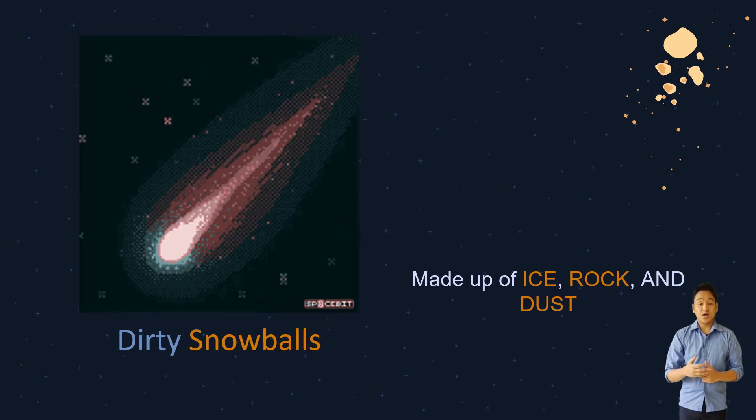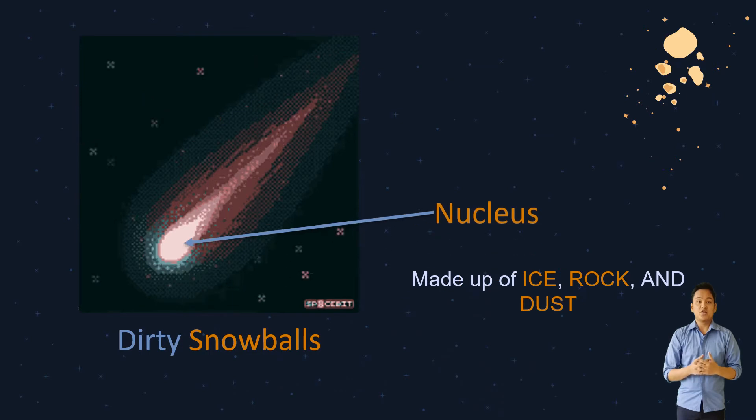Occasionally, a comet's orbit can be altered by larger objects or from the collision with another body, which sends the comet into our inner solar system and sometimes straight into our sun. The center of the comet is called the nucleus.